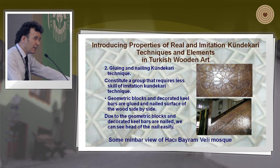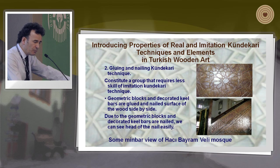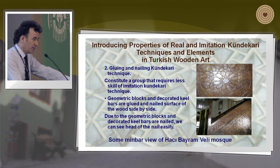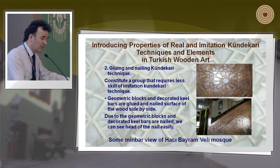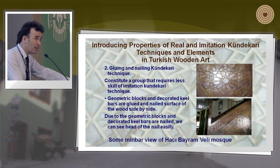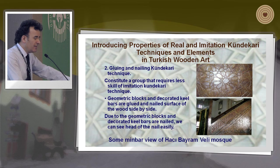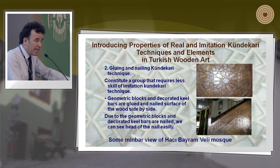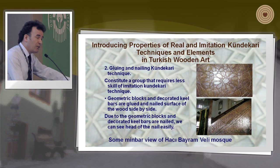The second imitation type is gluing and nailing Kundakari technique. It constitutes a group that requires less skill in imitation Kundakari technique. Geometric blocks and decorated kill bars are glued and nailed side by side onto the surface of the wood. Because the geometric blocks and decorated kill bars are nailed, we can see the heads of the nails easily since this technique is created using nails.